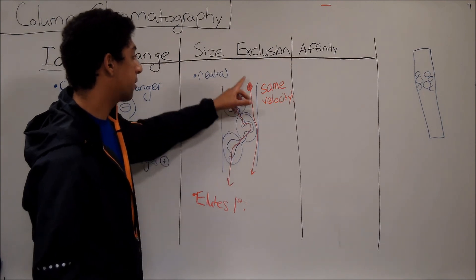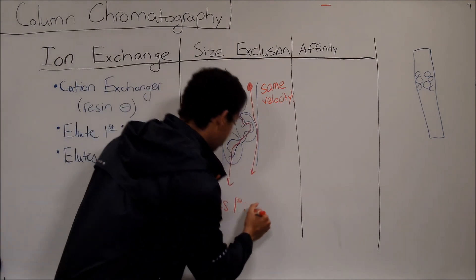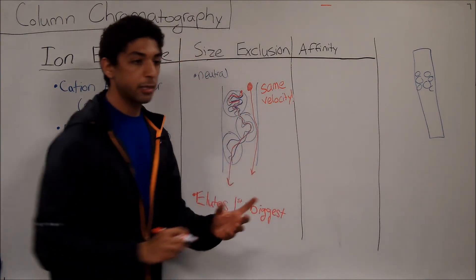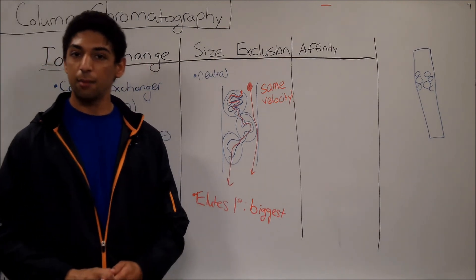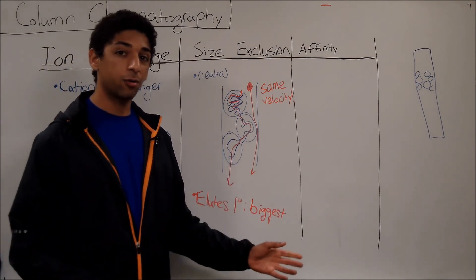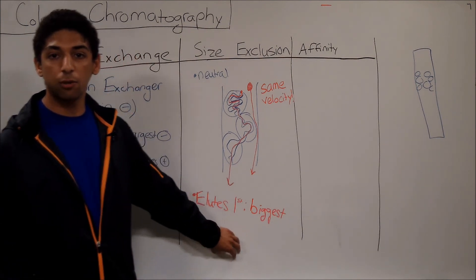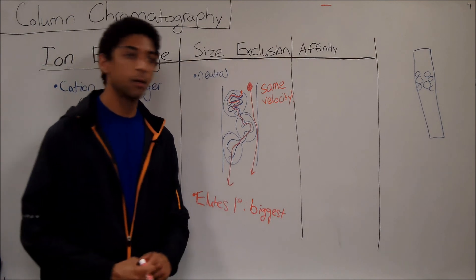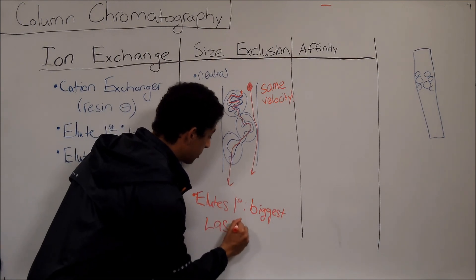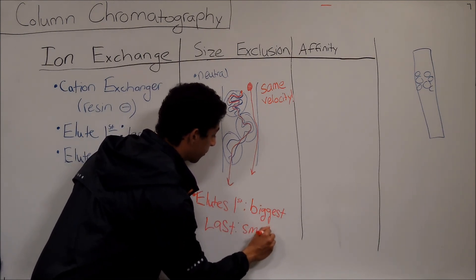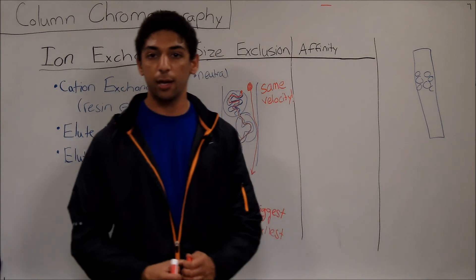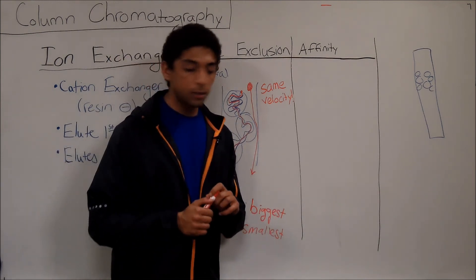The biggest molecules won't fit inside the path, so they just bypass it and go right to the bottom. By biggest we mean biggest in size, but for the purpose of just about any exam you can assume that biggest size means biggest molecular weight. The thing that elutes last would be the smallest molecules, because they have to take the really long convoluted path, so it takes them a while to get out the other end.